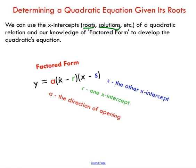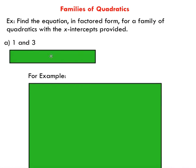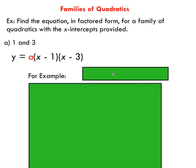So what we want to do is we want to take our factored form expression and we want to plug our x-intercepts in for r and s. So when we do that, we end up with this expression here. Notice that we have x minus one and x minus three. The sign in the expression is opposite to your x-intercept.